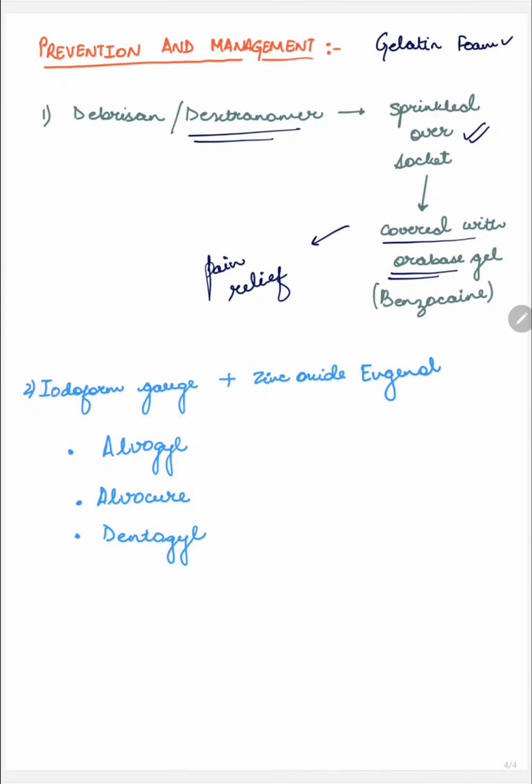Our main aim is to keep the socket clean and protect the exposed bone. So the socket should be cleaned or irrigated with mild warm antiseptic such as Betadine and then filled with the obtundent dressing. The most commonly used socket dressings are Zinc Oxide Eugenol with Iodoform Gauze, which are available in the market under the name of Alvogyl, Alvocure, and Dentogel.